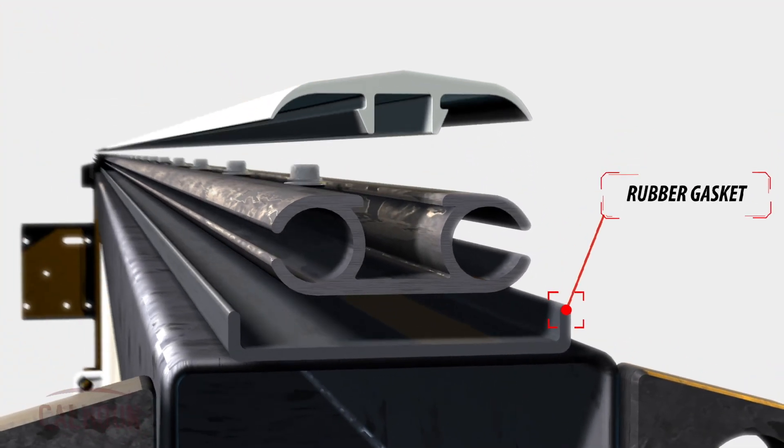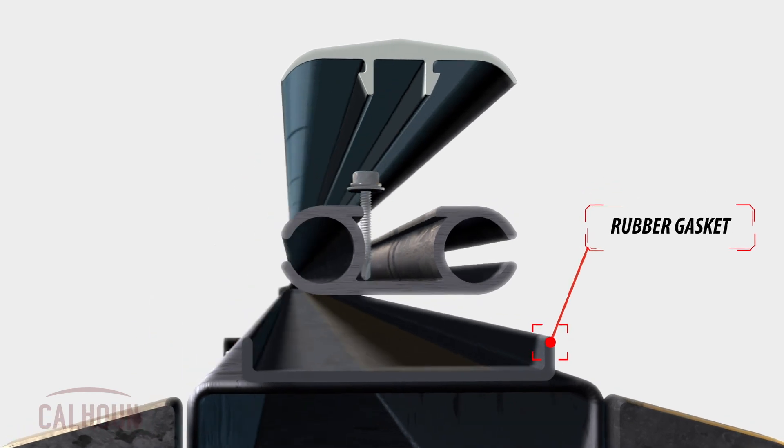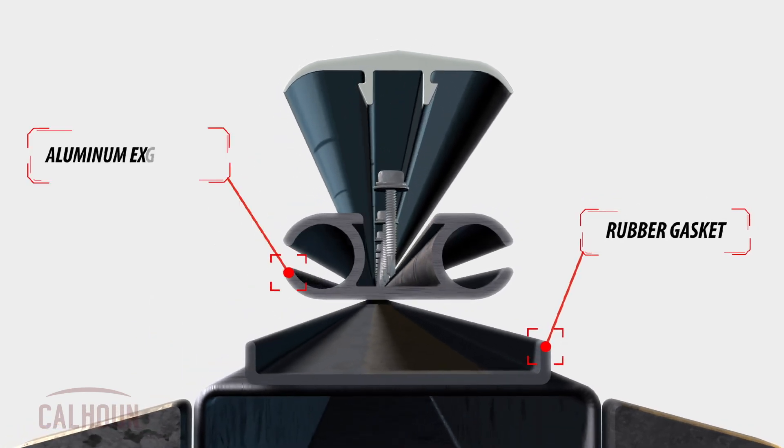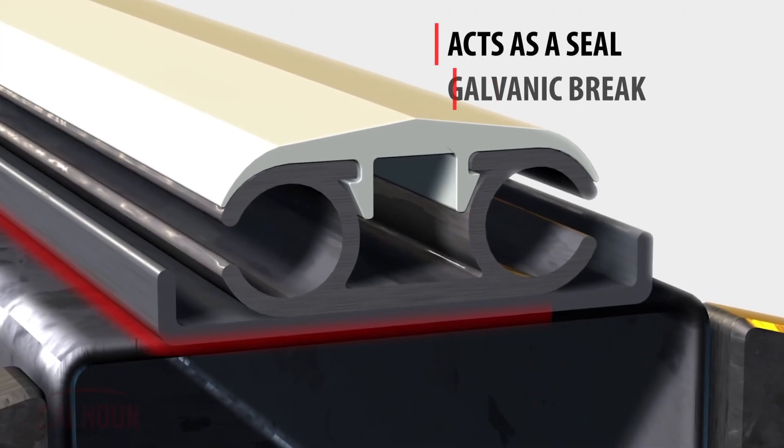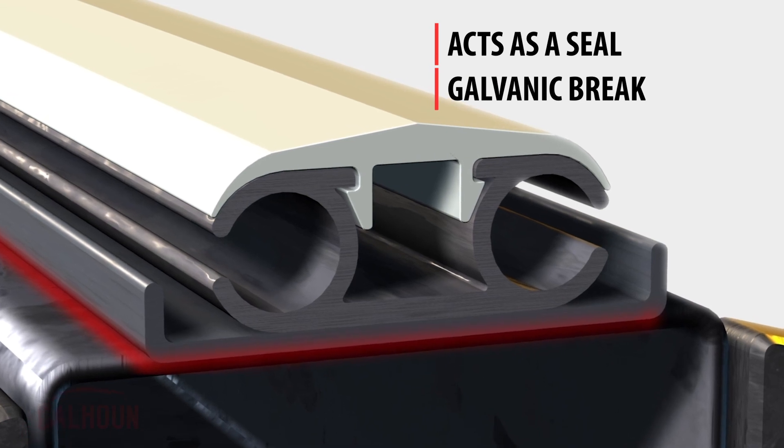We have a rubber gasket that attaches onto the top of the truss and is sandwiched between the aluminum extrusion that holds the fabric and the actual truss. That performs a couple of functions. One is as a seal. Second, it provides a galvanic brake so there's no electrical connection between the aluminum extrusion and the steel truss.